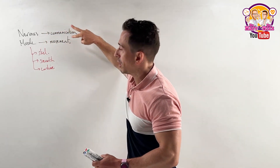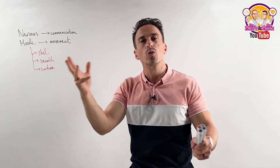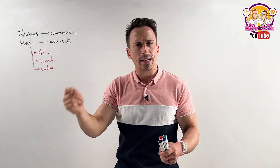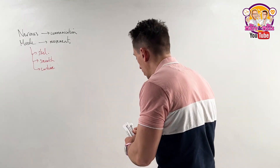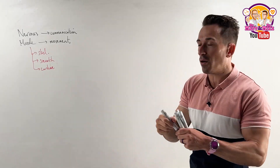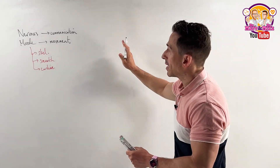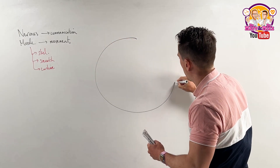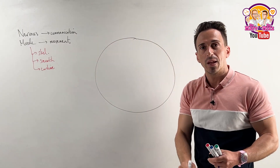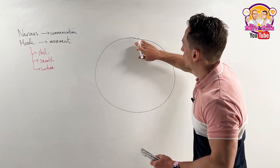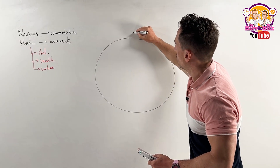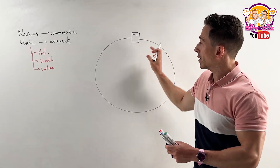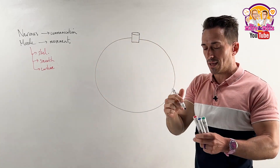So we've got these two major tissue types that can do nothing or do something. The question then is: what makes them excitable? We need to first begin with just the general cell. If I were to draw up a cell, this cell is going to be representative of both nervous and muscle tissue. What we need to understand is that there are various channels and pumps lining the membrane of the cell.